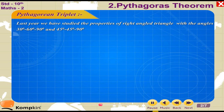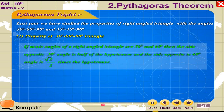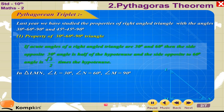Last year, we studied the properties of right-angled triangles with angles 30°, 60°, 90° and 45°, 45°, 90°. Property 1 — 30-60-90 Triangle: If the acute angles of a right-angled triangle are 30° and 60°, then the side opposite to 30° is half of the hypotenuse, and the side opposite to 60° is (√3)/2 times the hypotenuse.